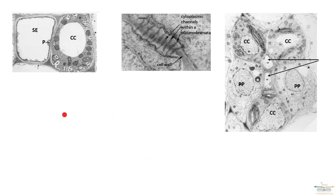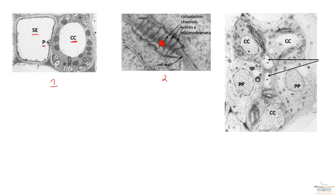Next we'll look at the plasmodesmata mentioned earlier. In image number one, you can see the companion cell right next to the sieve tube element, with the letter P labeling the plasmodesmata. Image number two is a magnified view of the plasmodesmata — this is something you need to be able to recognize as it comes up in exam questions. The dark lines are the channels that connect the companion cell with the sieve tube element, and substances pass through those channels into the sieve tube element.